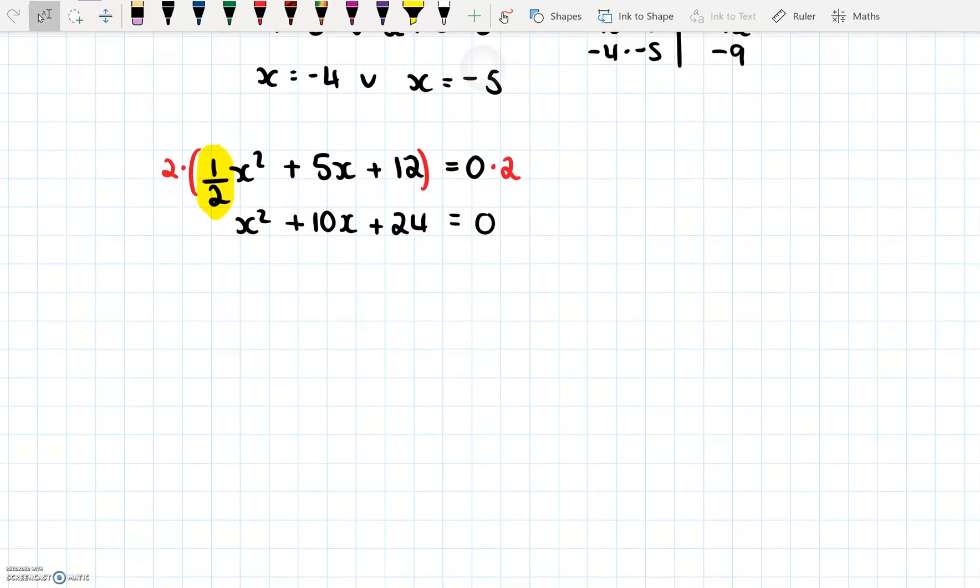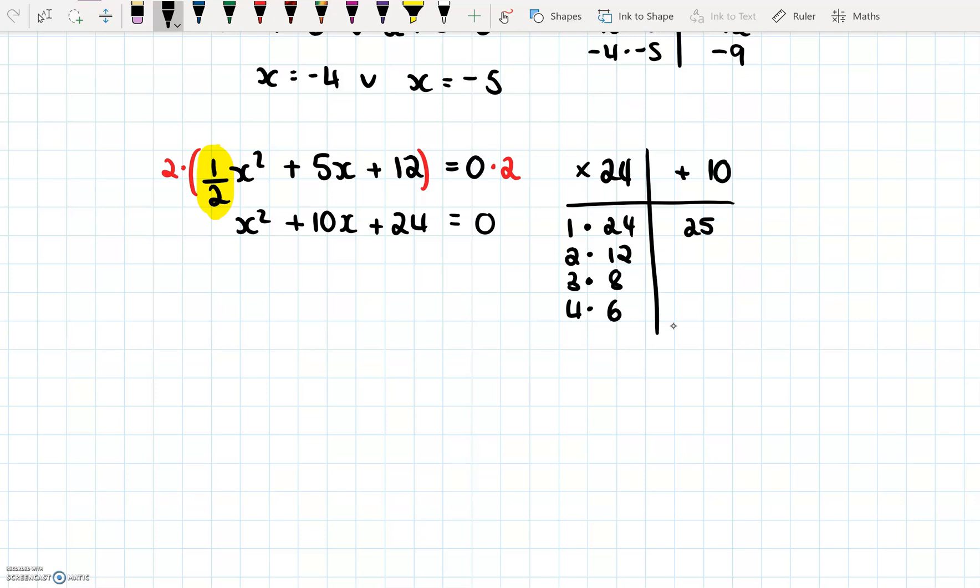And now again, we have a lovely example of where we can use the product sum rule. They need to multiply to give 24 and add to give 10. So what numbers multiply to give 24? We have 1 times 24, we have 2 times 12, 3 times 8, 4 times 6. And then we have the negatives of all of those. Look, in this case, they're both positive. I know there's no negatives, so I'm not going to make the whole table. 1 + 24 is 25, 2 + 12 is 14, 3 + 8 is 11, and 4 + 6 is 10. And we were looking for, in this case, this one, 4 + 6 is 10. So our numbers are 4 and 6.